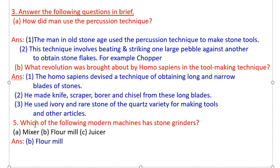Question number five: Which of the following modern machines has a stone grinder? Options are mixer, floor mill, and juicer. Mixer and juicer do not use a stone grinder, so the answer is floor mill.